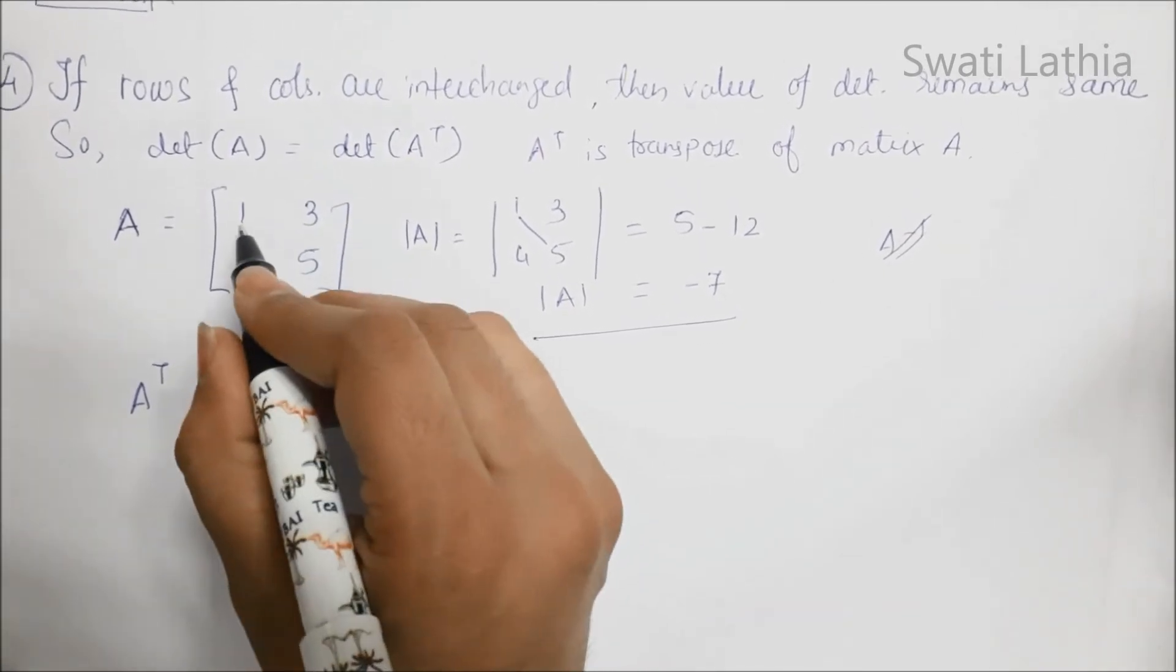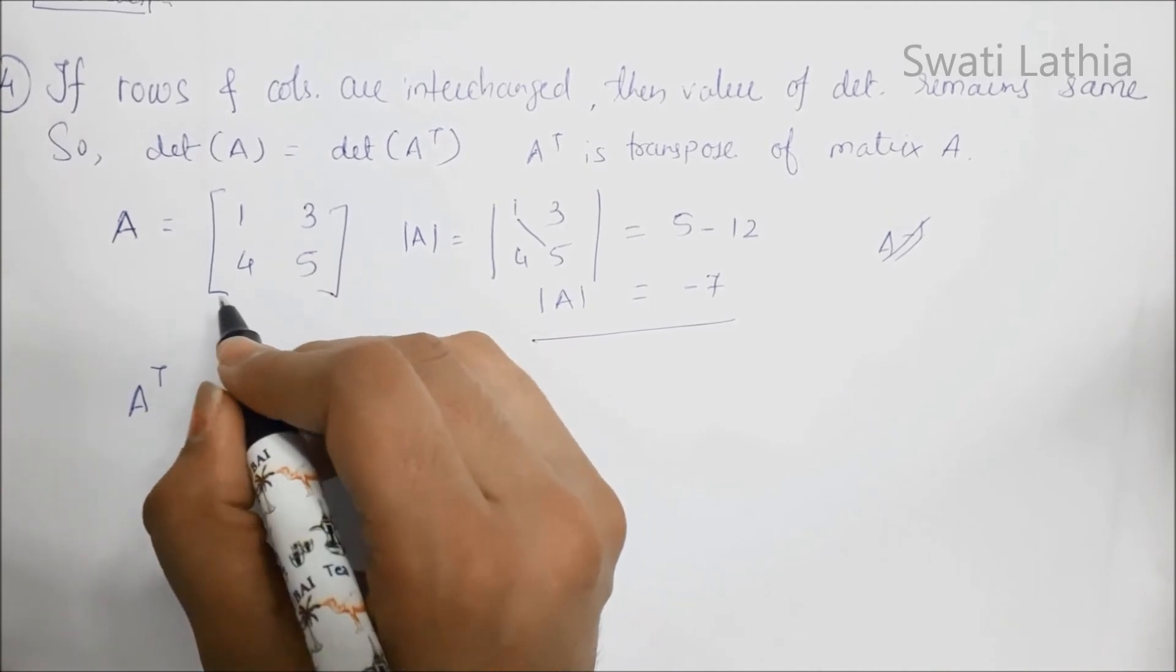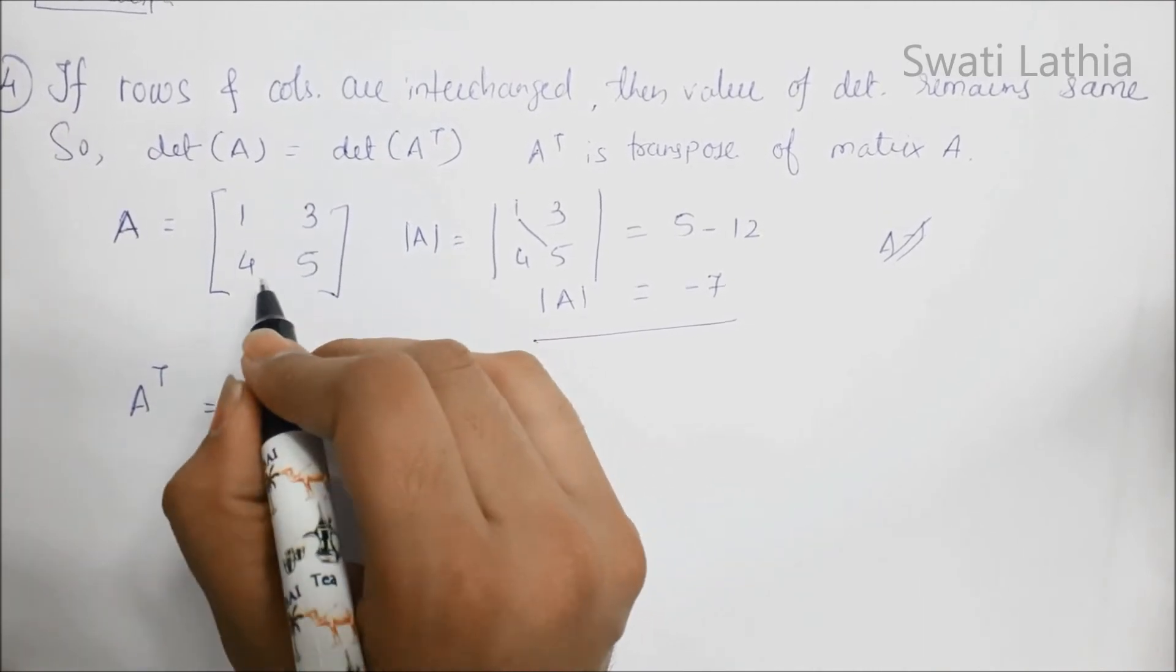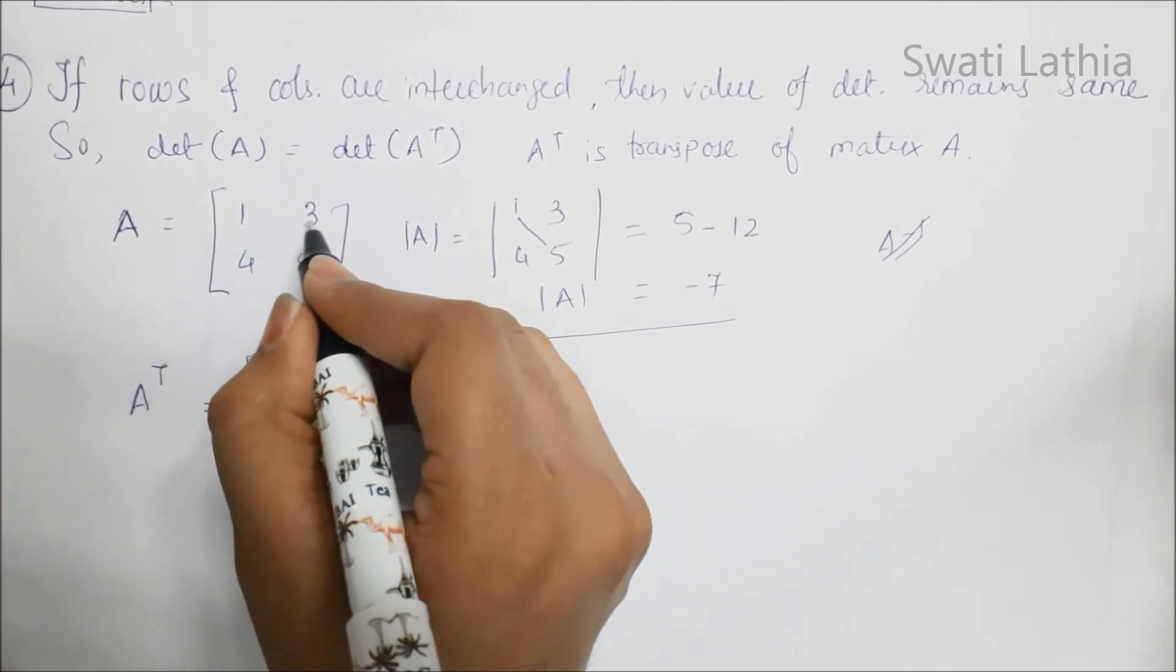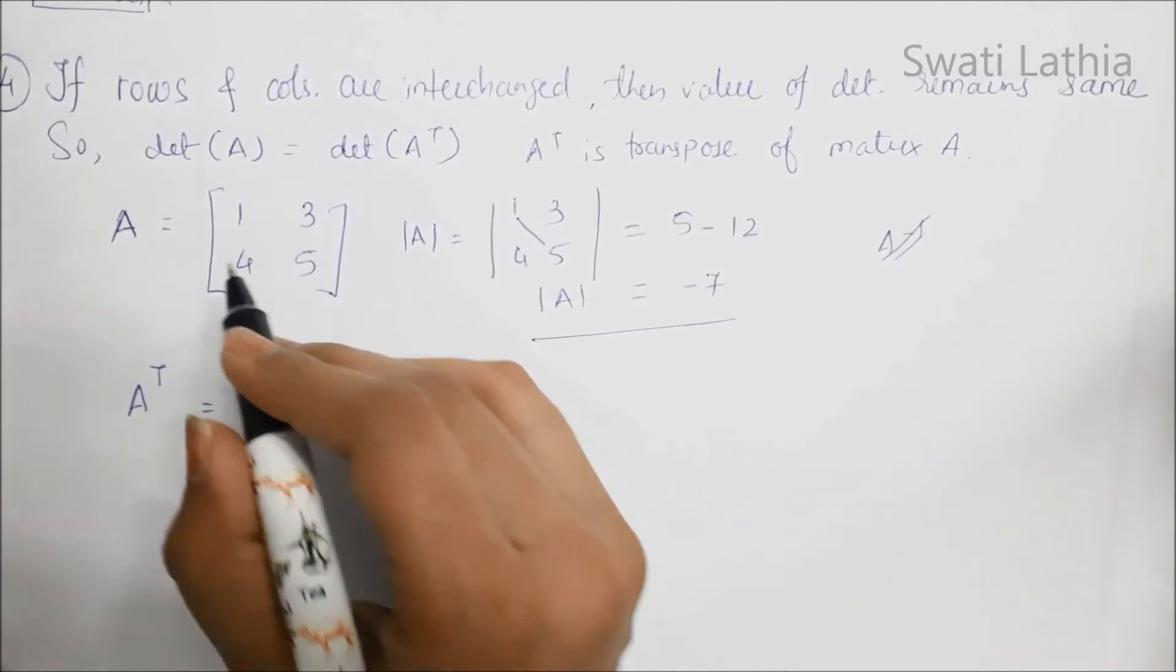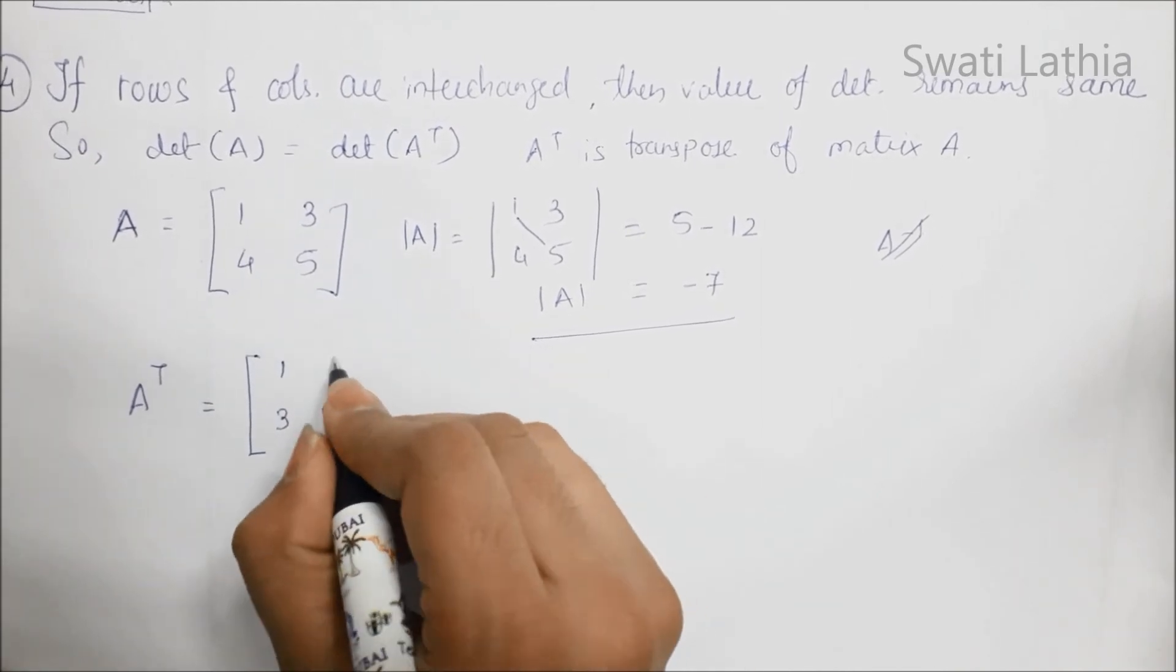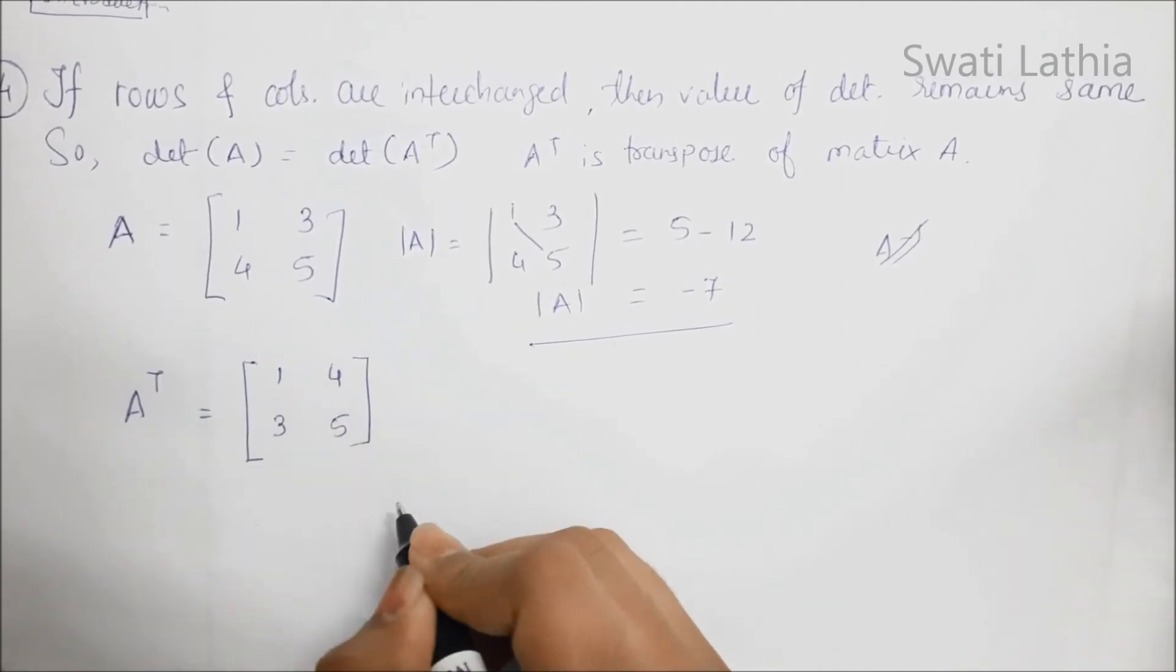હે Transpose કરવા માટે rows ને I am going to change the row to column: 1, 3, row મજે and I am column બના વી go. 2nd row ને પણ column બના વી પાડી 4 and 5. Now,